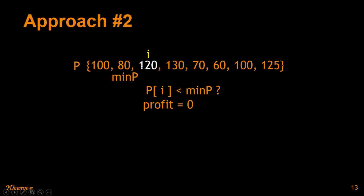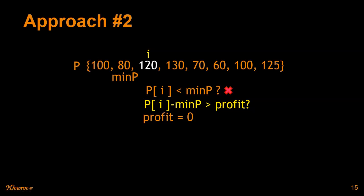We see 120 as the stock price. If we consider buying at this point, is it the minimum buying price? No — so this condition becomes false. We try to calculate the profit: 120 minus 80, which is p[i] minus minimum buying price, equals 40. That is greater than the current profit, so we update the profit to 40.